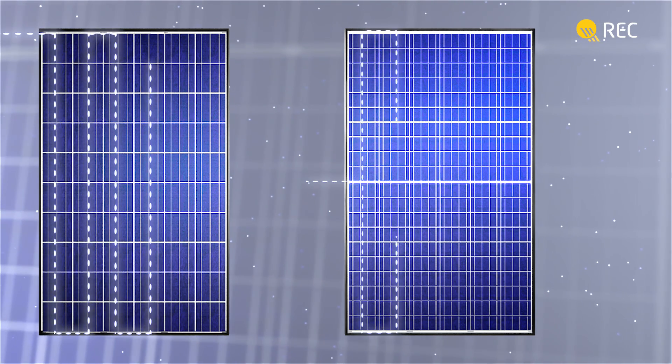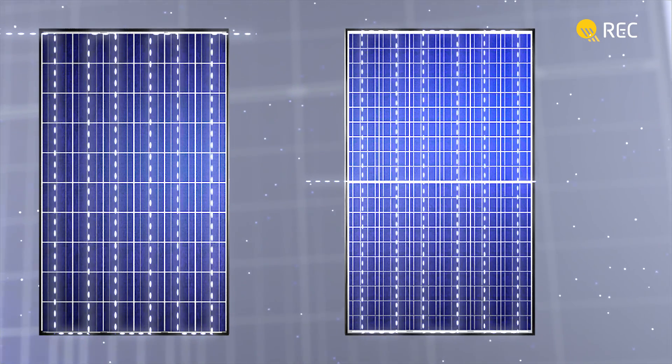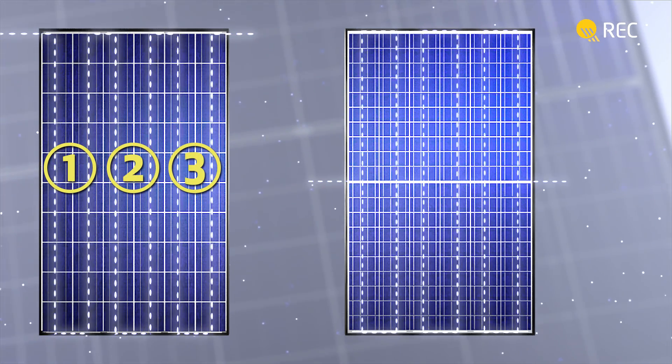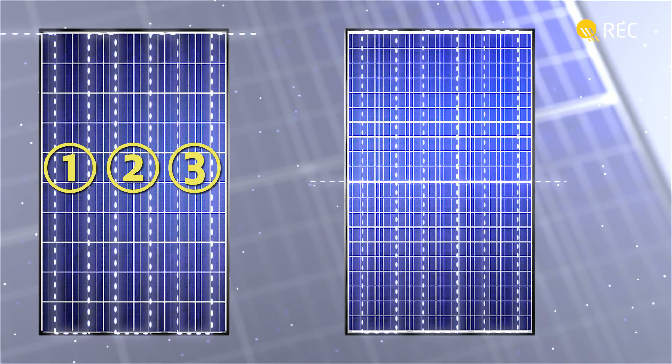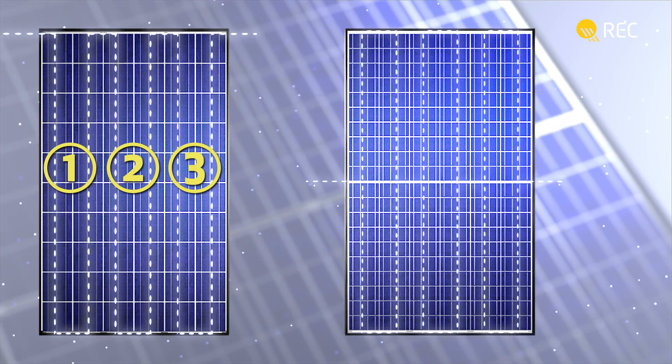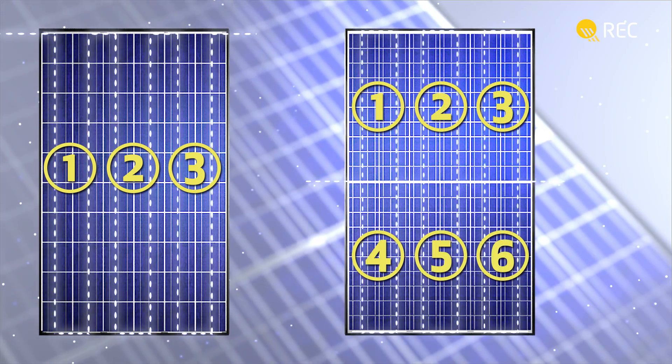In a standard 60-cell solar panel, the flow of current passes through three strings of 20 cells. The REC Twin Peaks series, however, has cells connected in six smaller strings in its two independent sections.